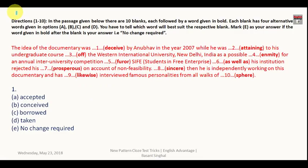This is the new pattern cloze test. Ten blanks are there and one word is already given in each option — you can see words like 'deceive', 'furor', 'attaining', 'anonymity'. What you have to do is: if you think the word already given is appropriate, your answer will be 'no change required'. If you want to replace it with one of the options, your answer will be A, B, C, or D.